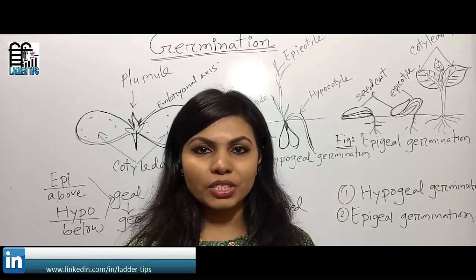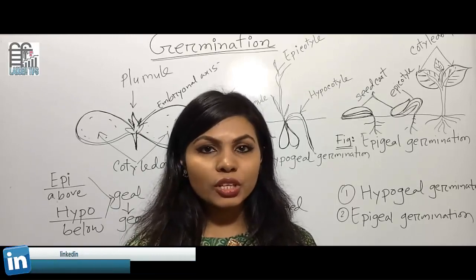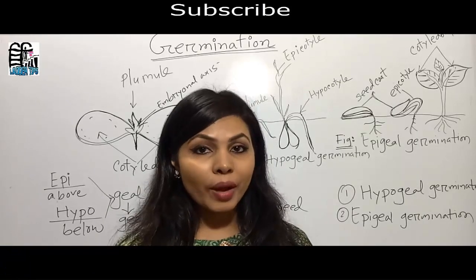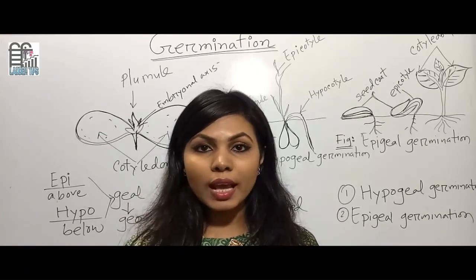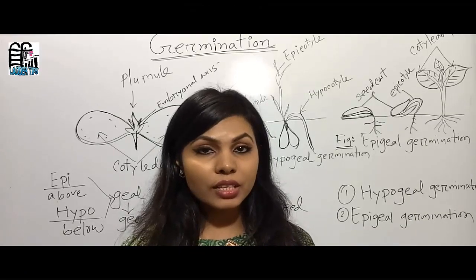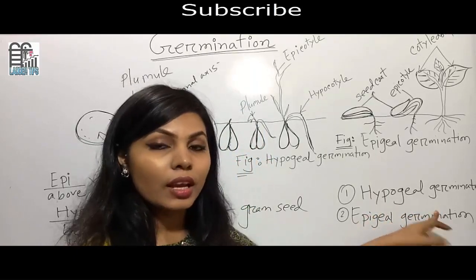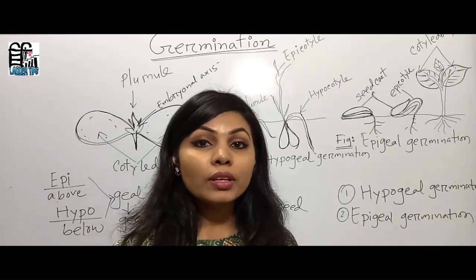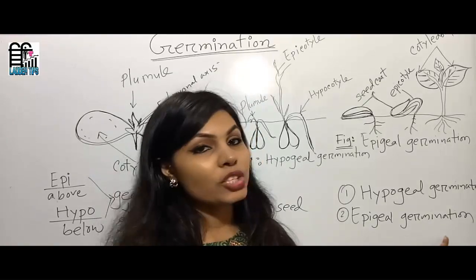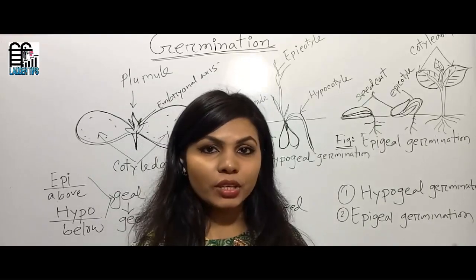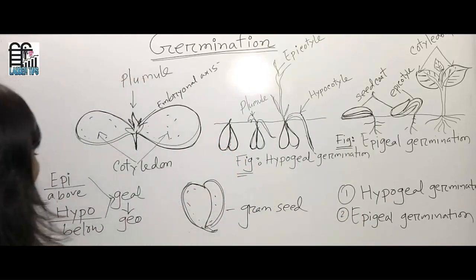In hypogeal germination, the epicotyl grows rapidly and as a result the plumule comes out of the soil, leaving the cotyledons underground. When the plumule comes out along with the cotyledons above the soil, that is called epigeal germination.